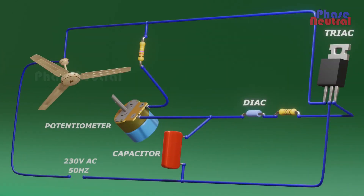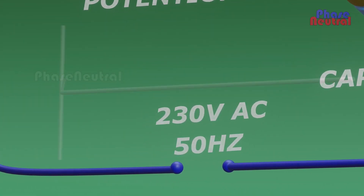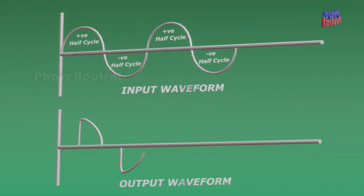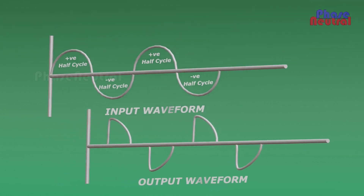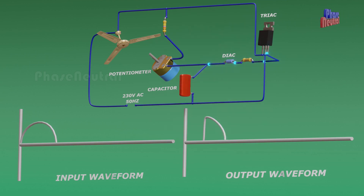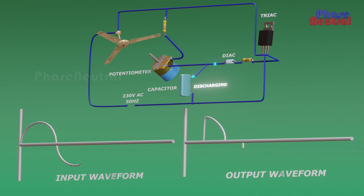This circuit works by varying the firing angle of the triac. The alternating current has positive and negative half cycles. When we give this input to the movable type electronic fan regulator circuit, it produces a phase angle cut waveform for the fan motor. When the voltage across the capacitor reaches more than the breakover voltage of the diac, the diac starts conducting, and the capacitor starts discharging towards the gate terminal of the triac through the diac. When the capacitor is charging, the output voltage is zero, and during capacitor discharging, the output voltage is high, because the triac starts conducting and current flows to the output through the triac.